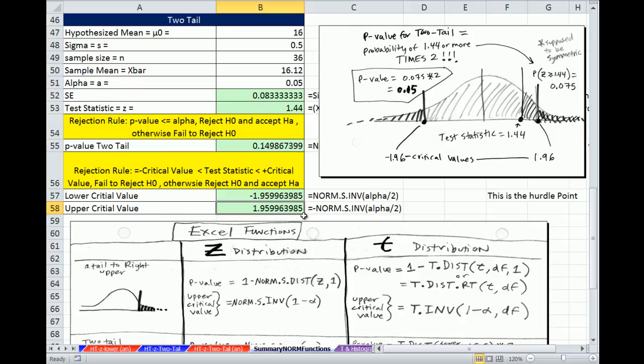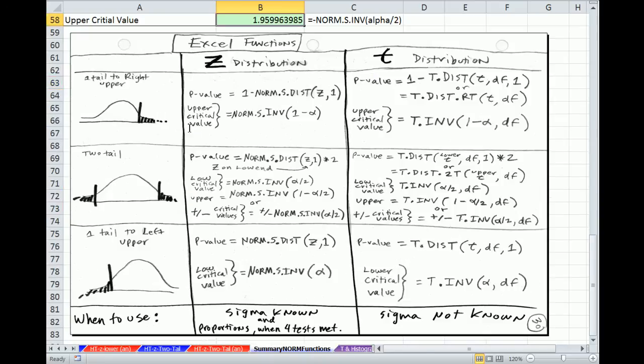That's a summary. Six examples, a p-value and a critical value test statistic calculation for each one of our tailed tests. Now coming up in the next few videos, we'll be talking about what to do if we don't have sigma, our standard deviation for the population, and we'll see how to use the t functions. See you next video.